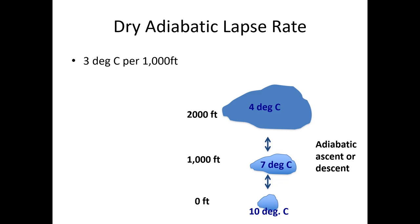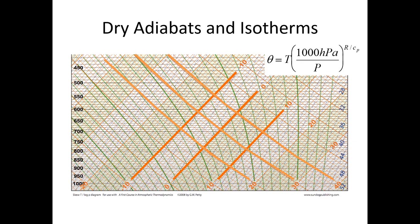So first I want to explain the dry adiabatic lapse rate. If I had a parcel of air and raised it up 1,000 feet, that air is going to expand because the pressure is less. When the air expands, it's also going to cool — this is called the dry adiabatic lapse rate. It's the rate that air cools from expanding as it increases in altitude, approximately 3 degrees Celsius per 1,000 feet. These lines on the chart are the dry adiabat lines.